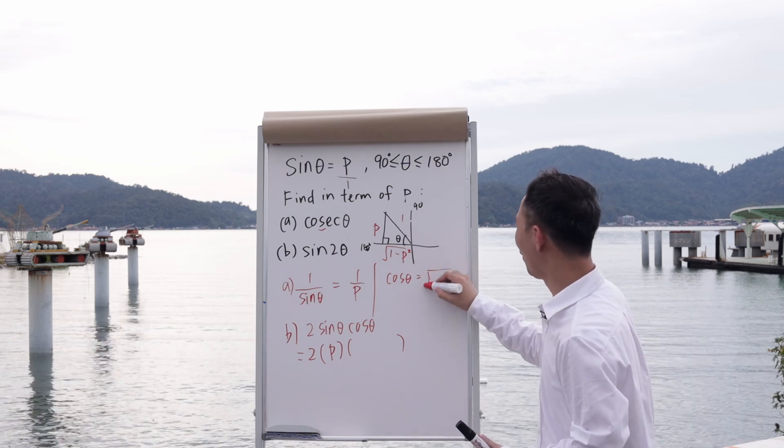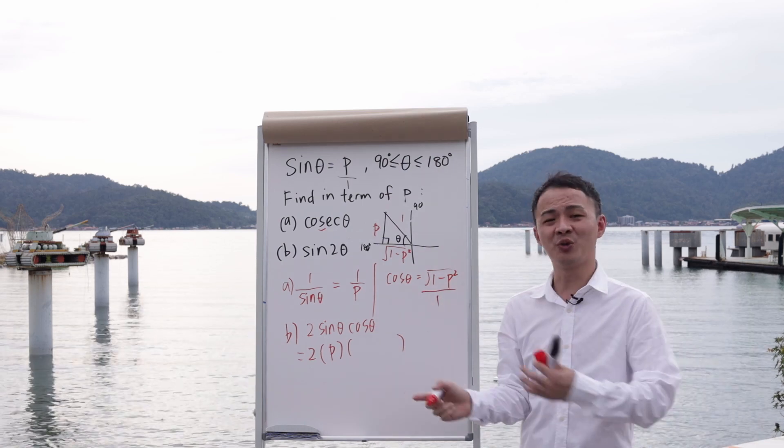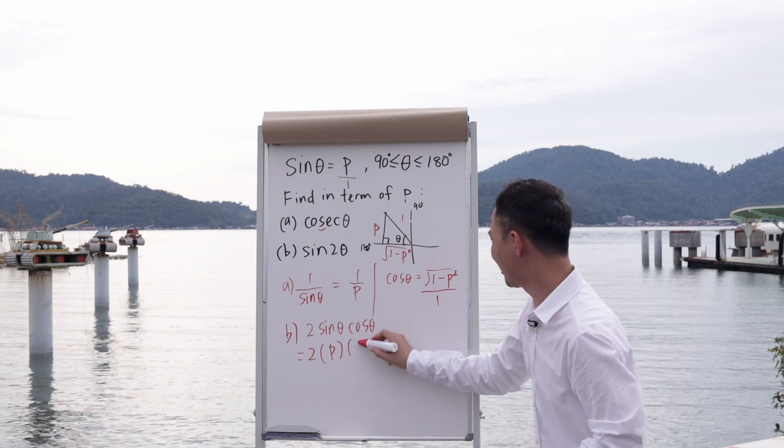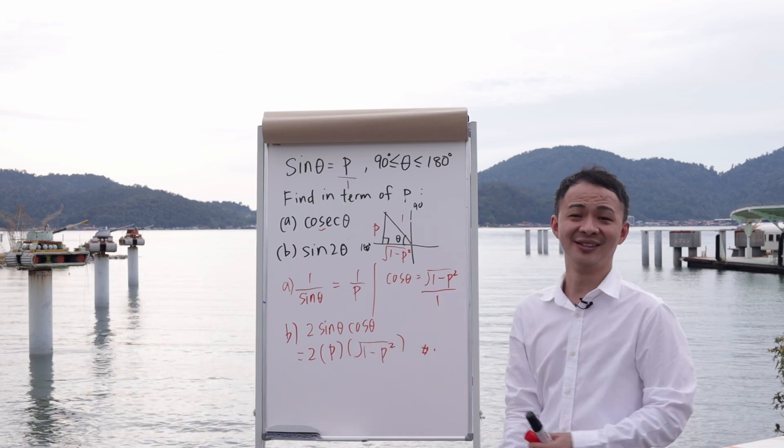So it's √(1-p²) over 1. But because it's over 1, you can write it or not—it doesn't matter. So this is your cos θ. Then you just substitute: √(1-p²). This will be your final answer.